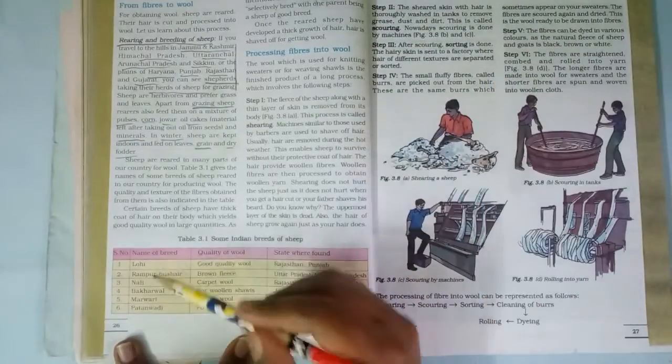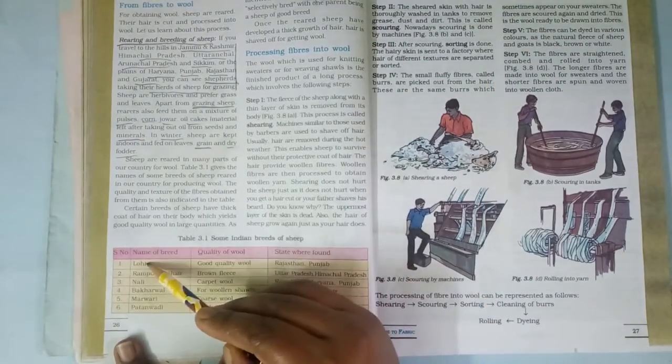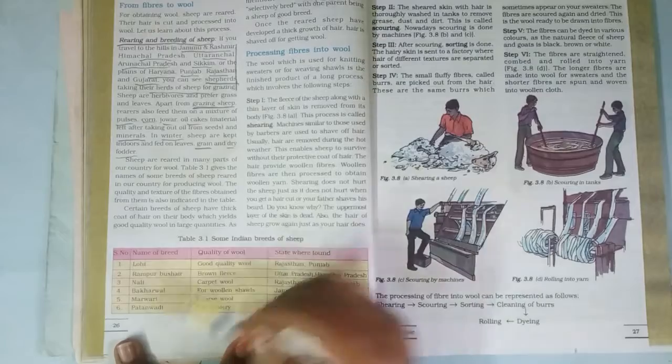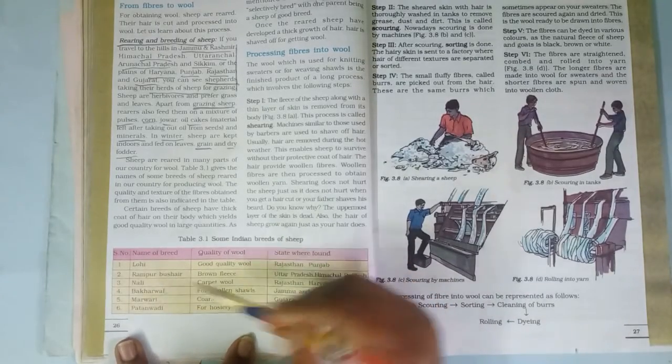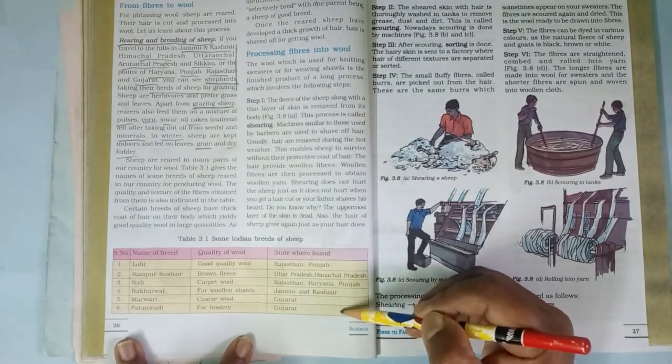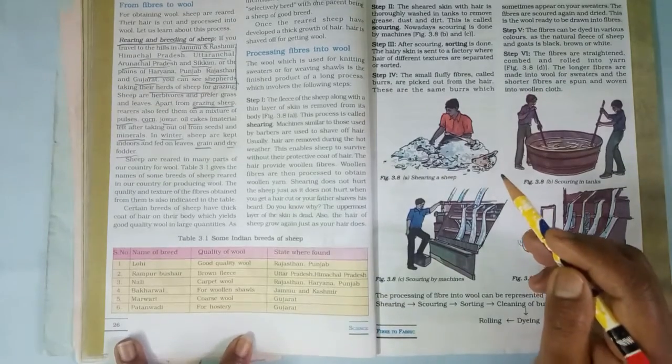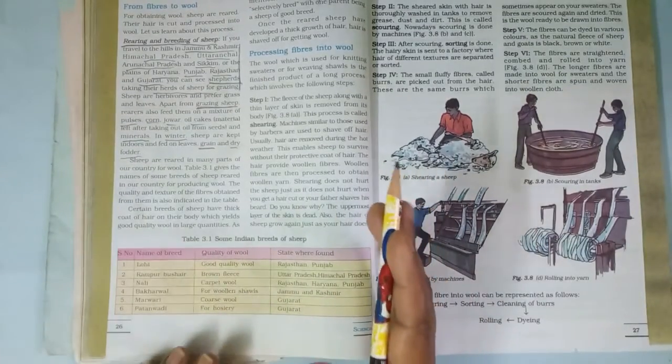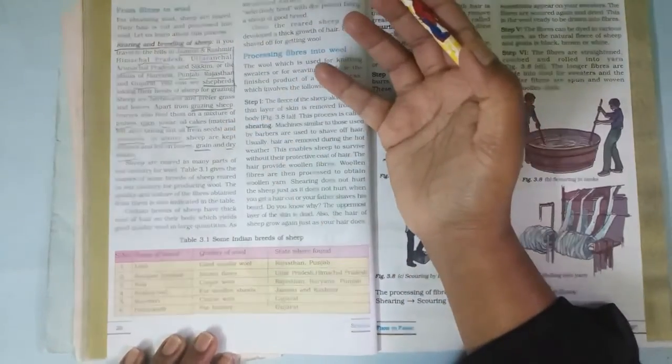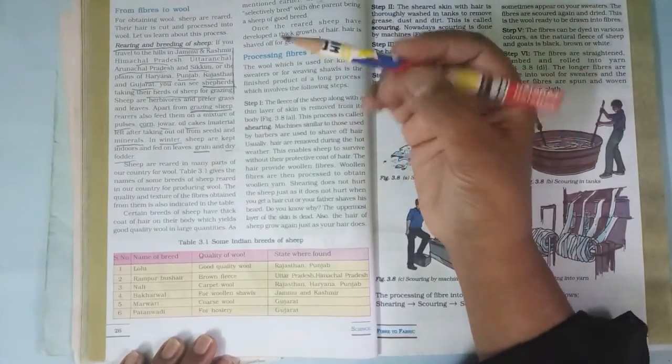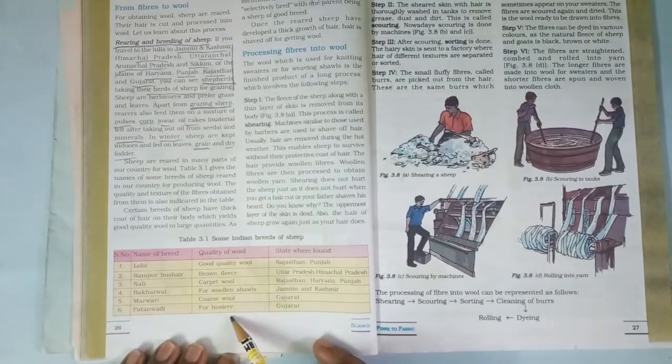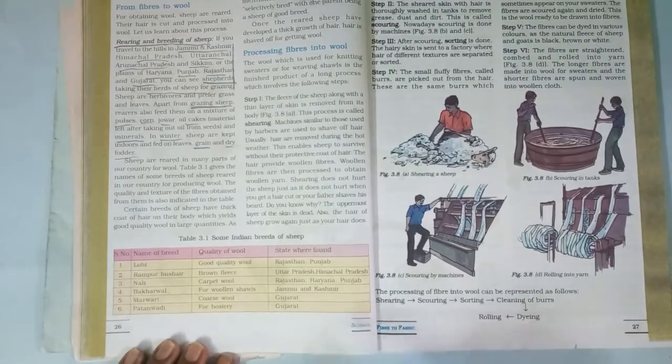These are the different types of breeds: Lohi, Rampur Bushair, Nali, Bakharwal, Marwari, and Patanwadi. These are the types of wool we get from these animal breeds. In this column you have the places where these animals are found. This session tells you what type of food is given for sheep to be reared and cared for, and what are the different breeds found in India.